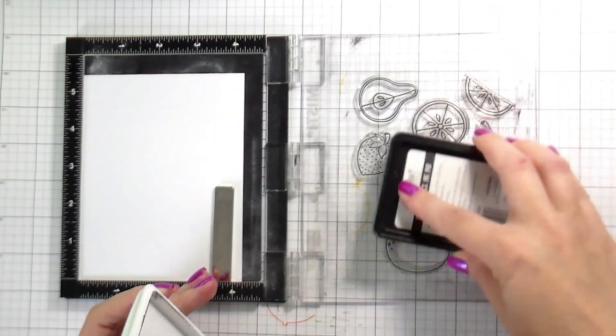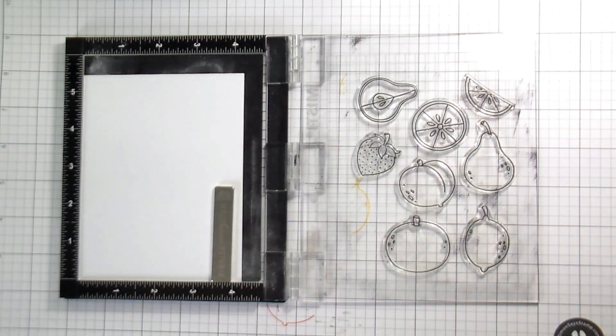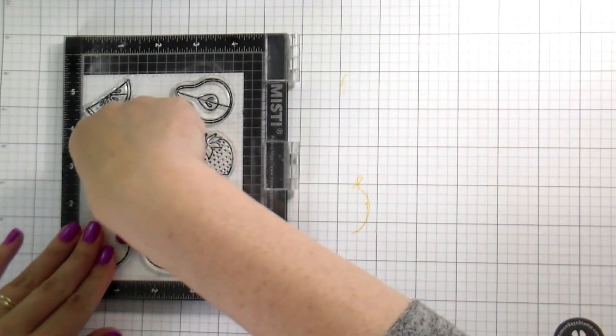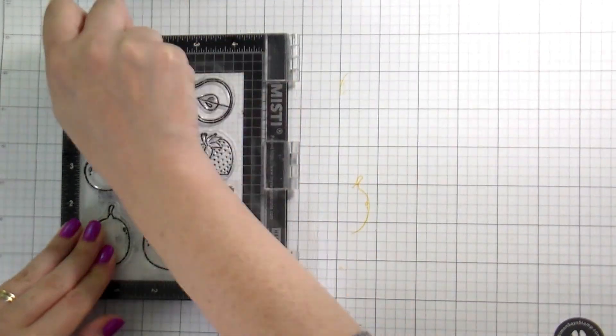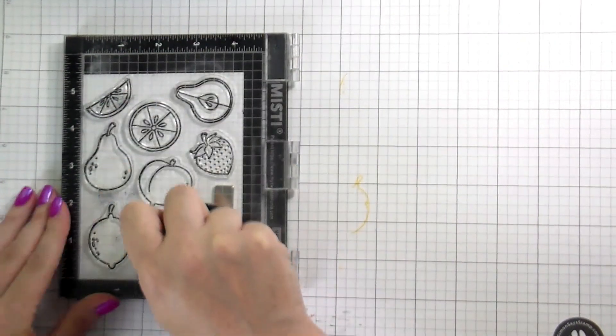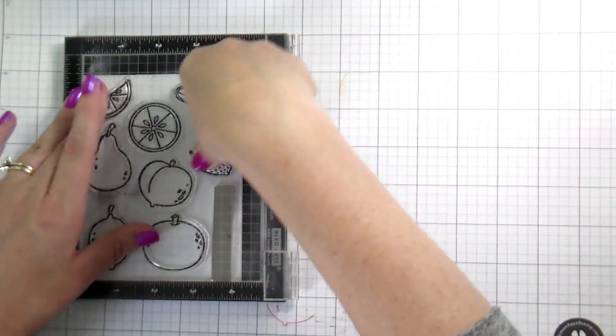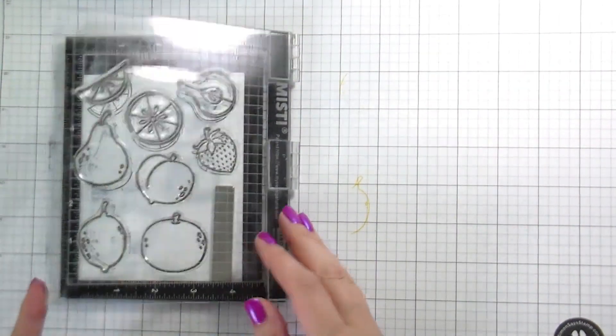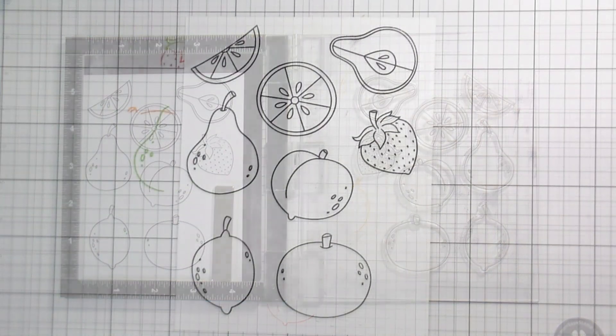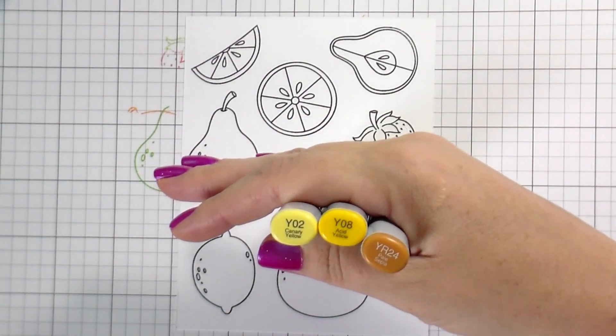I'm just going to go ahead and stamp this down. These are all of the images that I'm going to use for both cards. I did add a couple of extras in there that you didn't see in the stenciled background: I added in the watermelon, the little lemon or orange slice, and then the sliced pear.